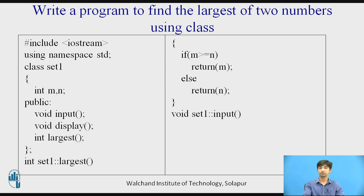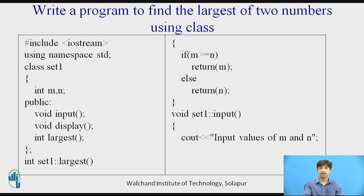Then I will define one more function called input. Its return type is void. It belongs to the class called set1 using the scope resolution operator, and I am defining the function outside the class. What is the input function doing? It gets the input values of m and n. I am using the cout statement with the insertion operator — whatever text or string is typed after the insertion operator will be displayed on the screen. Then cin with the extraction operator for m and n.